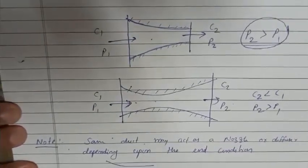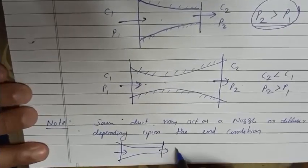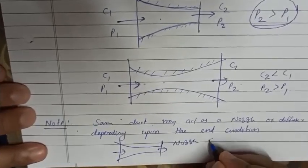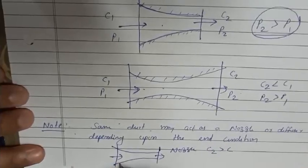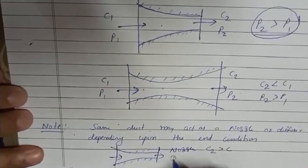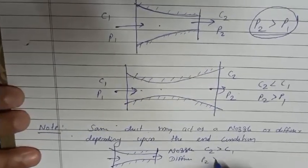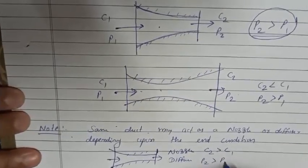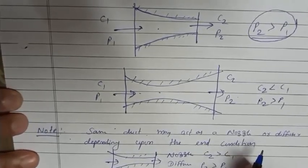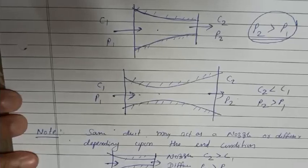A converging passage will act as a nozzle if C2 is greater than C1. The same passage can also act as a diffuser if P2 is greater than P1. So one device can function as either a nozzle or a diffuser depending on the exit condition.